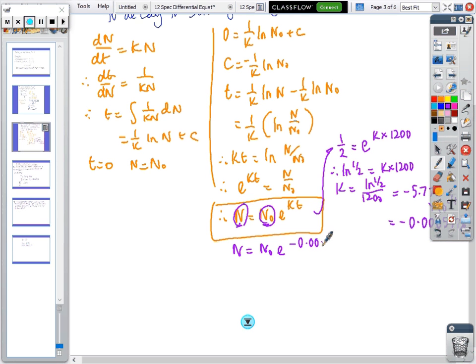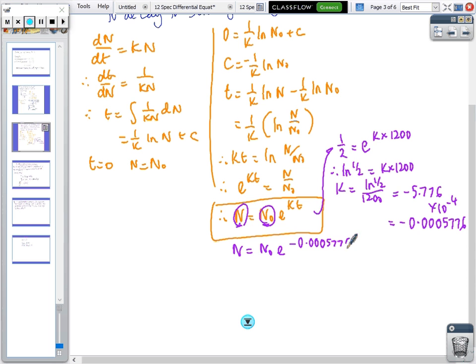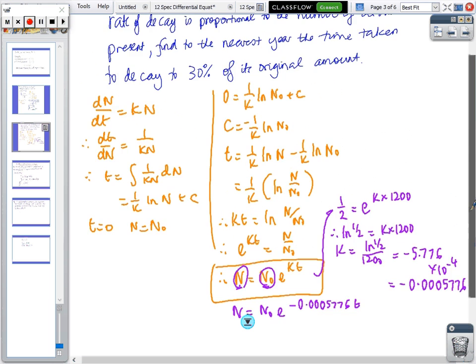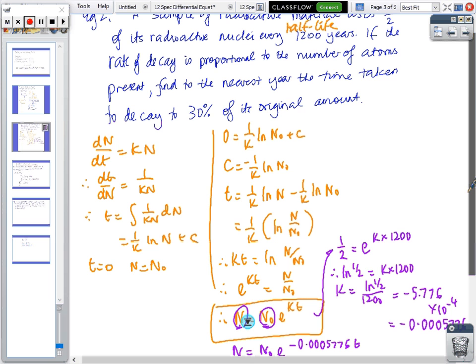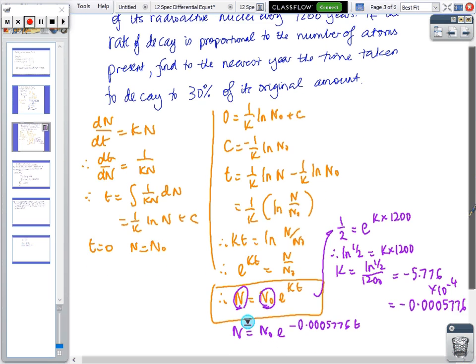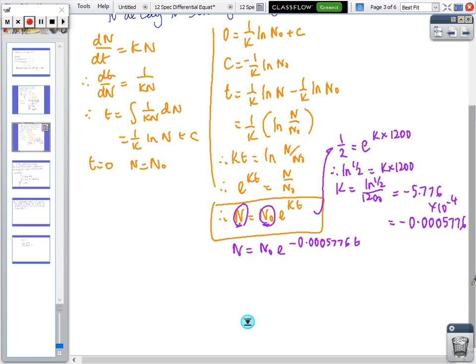So the formula is n = n_0 e^(-0.00057776t), and the question asks when will it get down to 30%. So this number here will be 30% of that, so 0.3 equals e^(-0.00057776t).